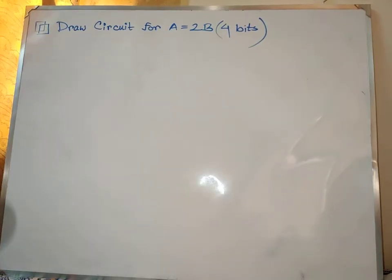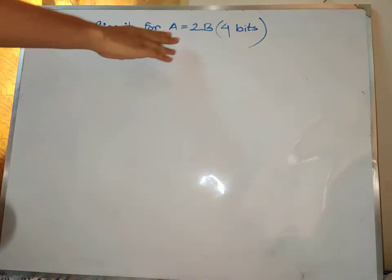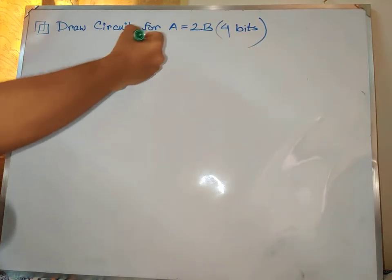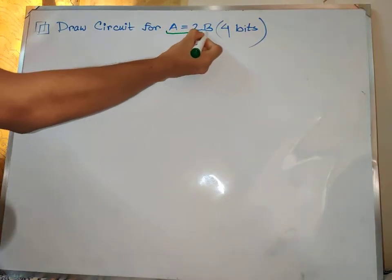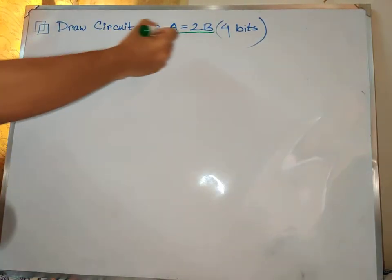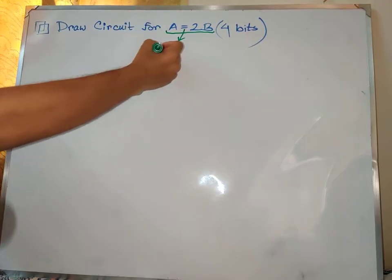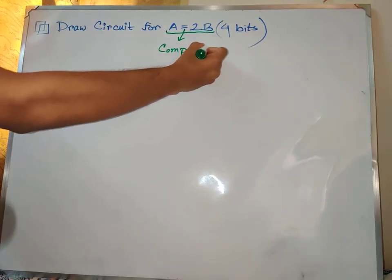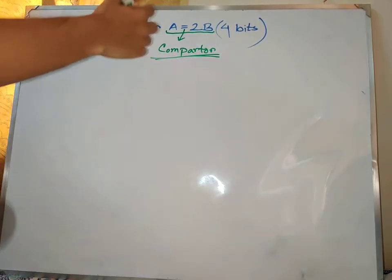Hello everyone. This is the problem where we have to draw a circuit equal to 2b. Suppose it is a 4-bit circuit, so we need to draw an a equal to 4b circuit. We can see how we can draw an a equal to 2b. When we have an equal sign, we can clearly see something related to a comparator.